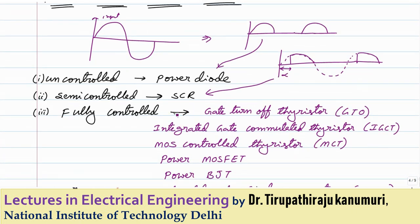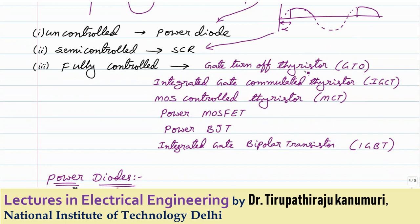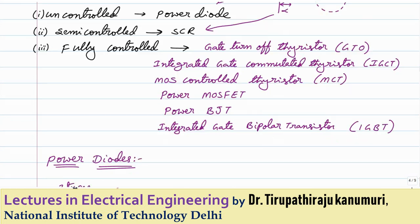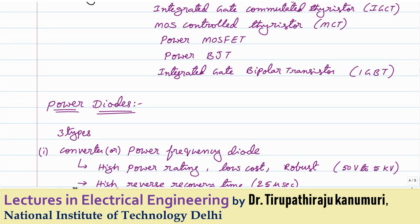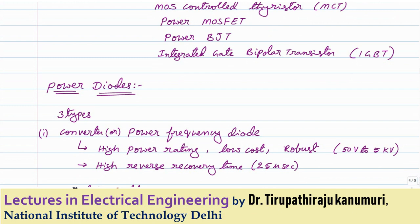The third type is the fully controlled device, where we can control both the instant of starting and stopping — switching on or off at any instant. Examples of fully controlled devices are Gate Turn-Off thyristor (GTO), Integrated Gate Commutated Thyristor (IGCT), MOS Controlled Thyristor (MCT), Power MOSFET, Power BJT, and Integrated Gate Bipolar Transistor (IGBT), which is a combination of SCR and transistor.